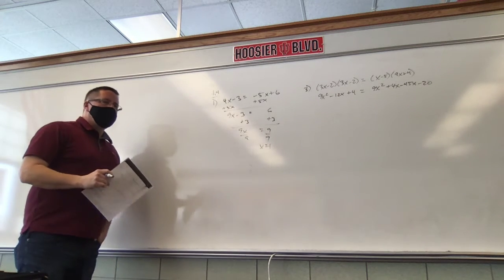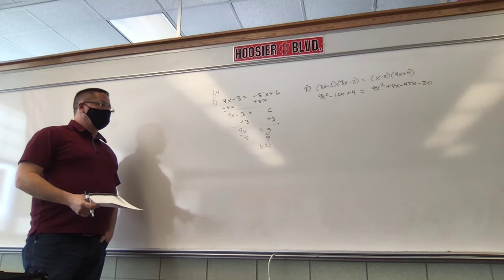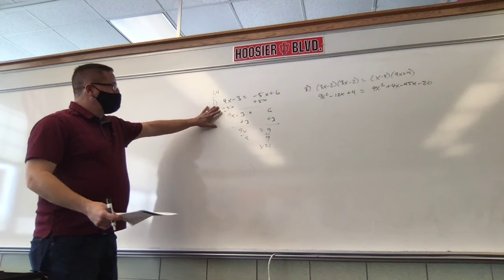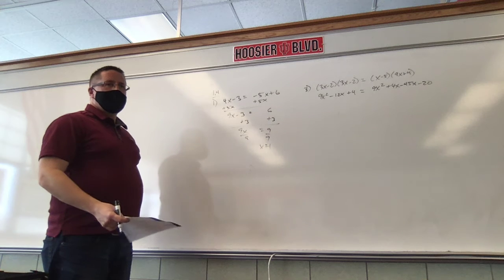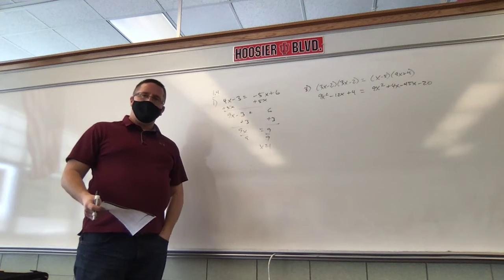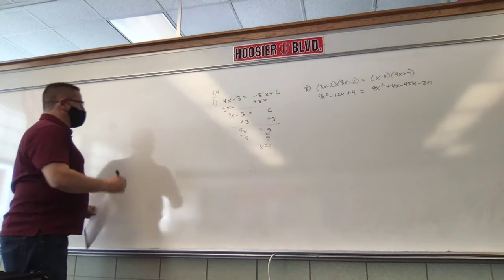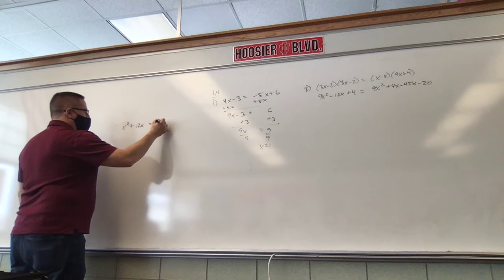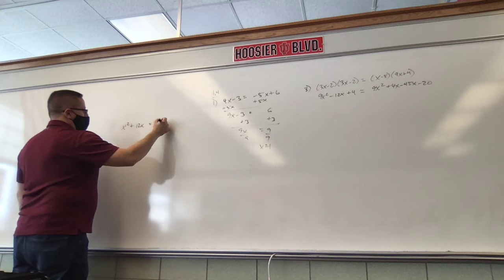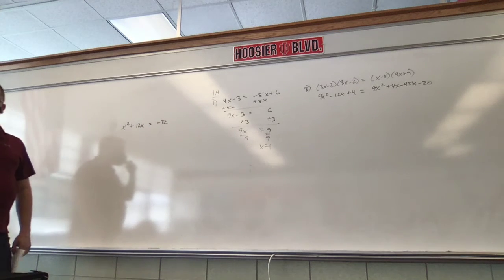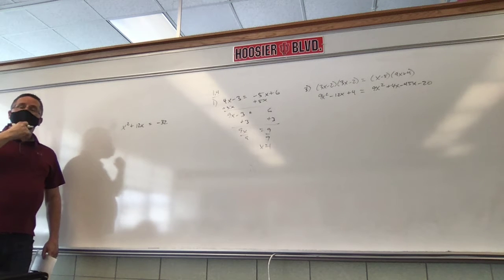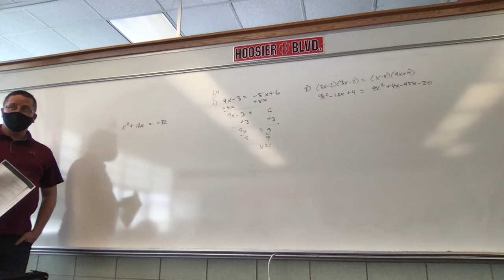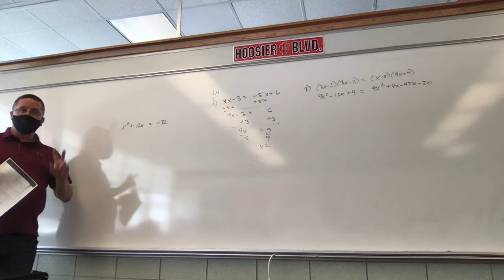Now, think about this before you shout out. Must this equal 0? We never made this thing equal 0. For example, x squared plus 12x equals negative 32 — must that equal 0? Yes. Why? It's a quadratic. Second degree has to. Quadratics always have to equal 0. Actually, it's not just quadratics — anything second degree or higher has to equal 0.